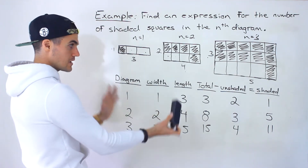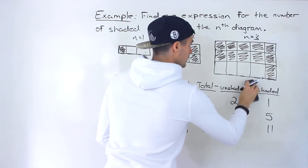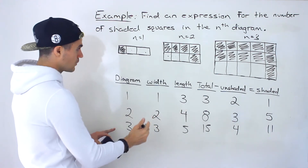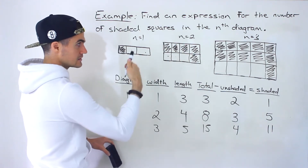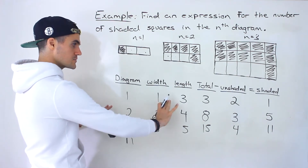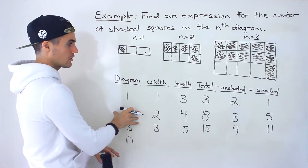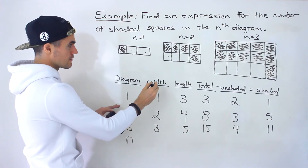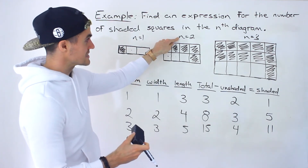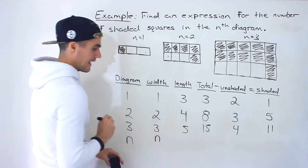Now let me erase those values and generalize for the nth diagram. Going through the columns and looking for patterns: the width column is simply the same as the diagram number. Width is one for the first diagram, two for the second, three for the third. So for the nth diagram, the width is just n.